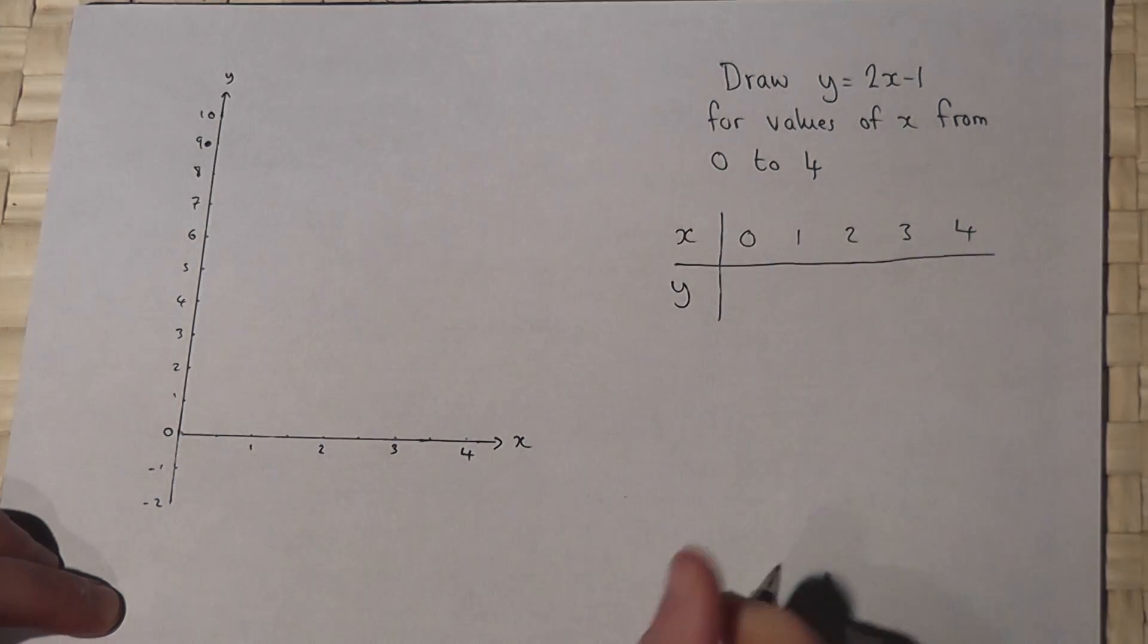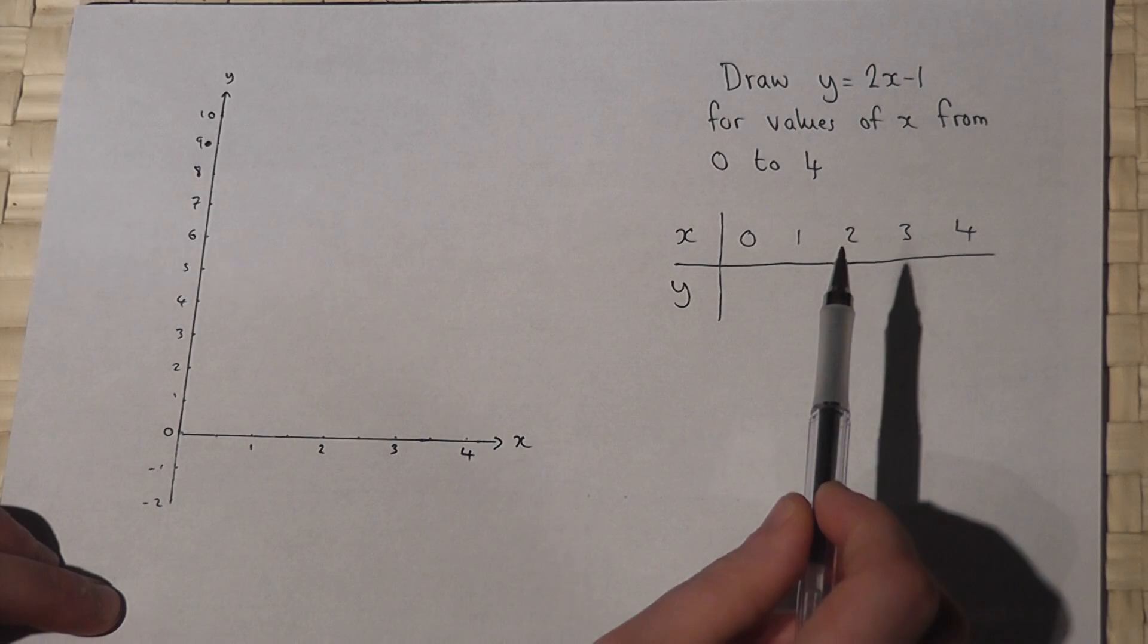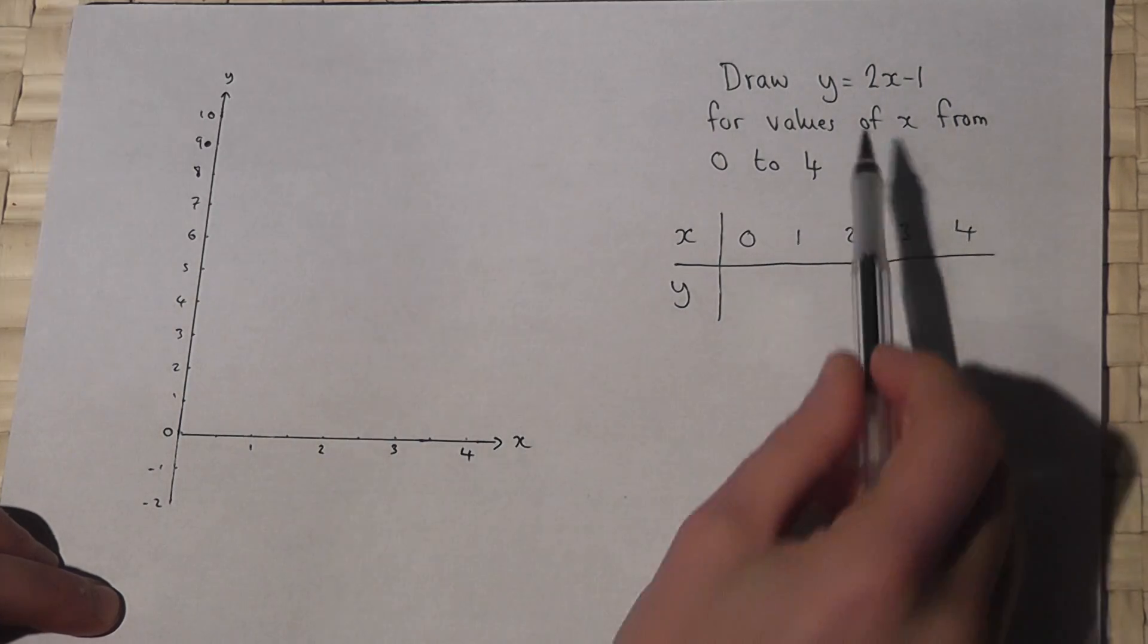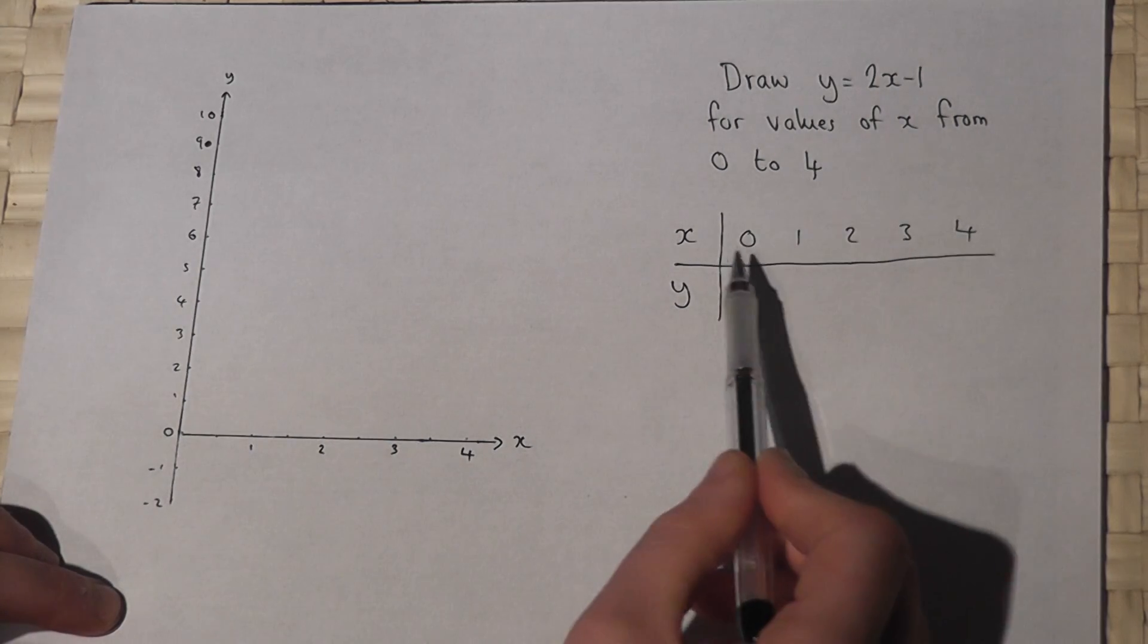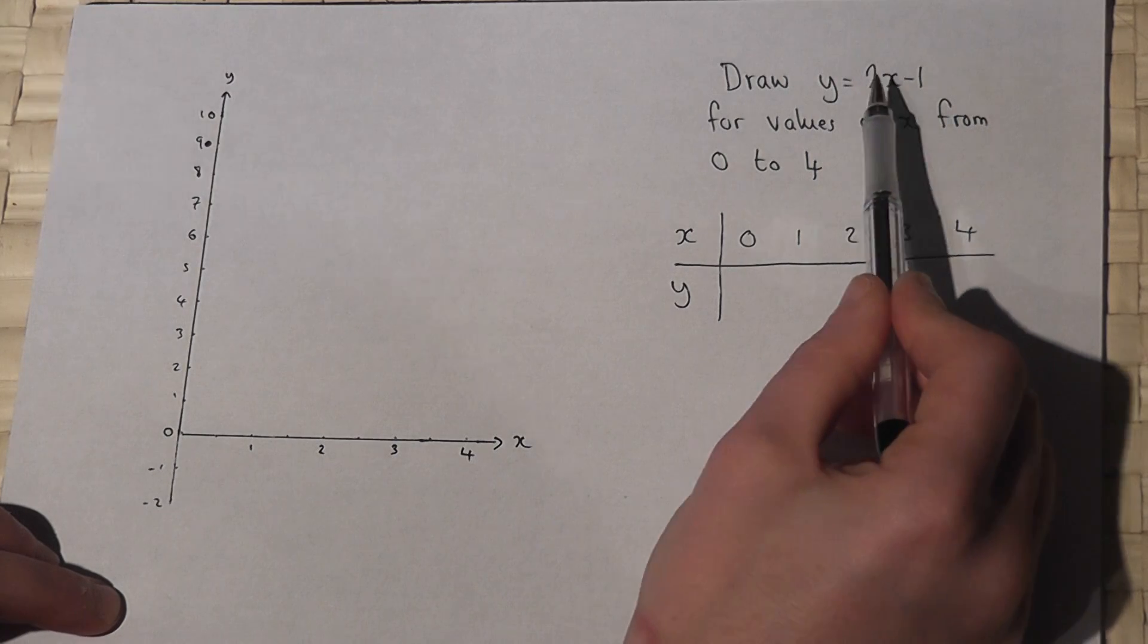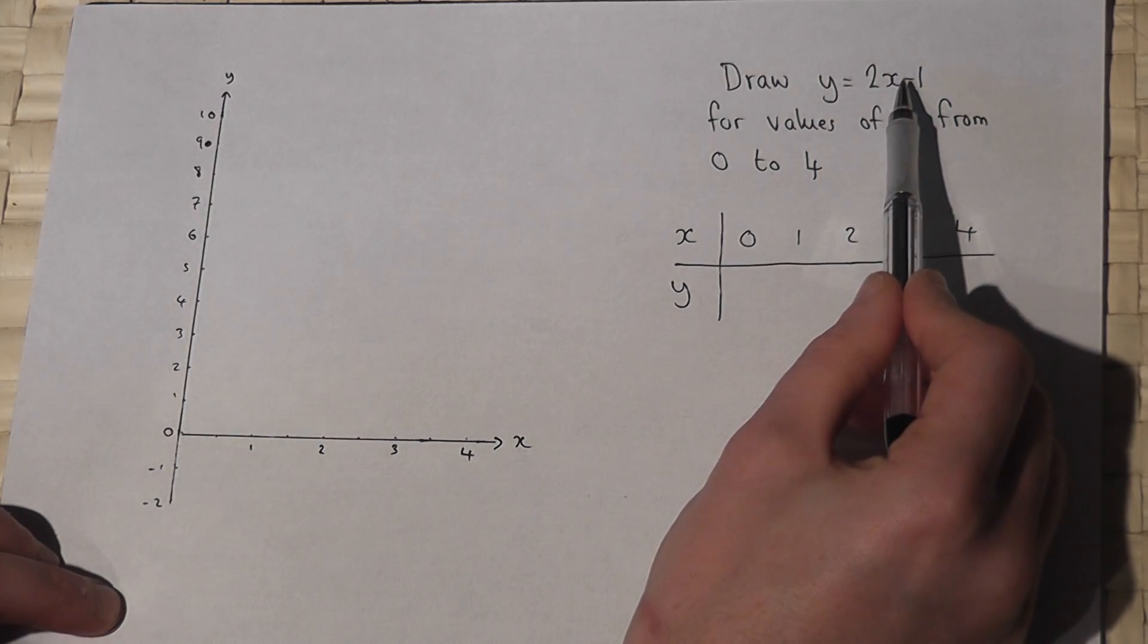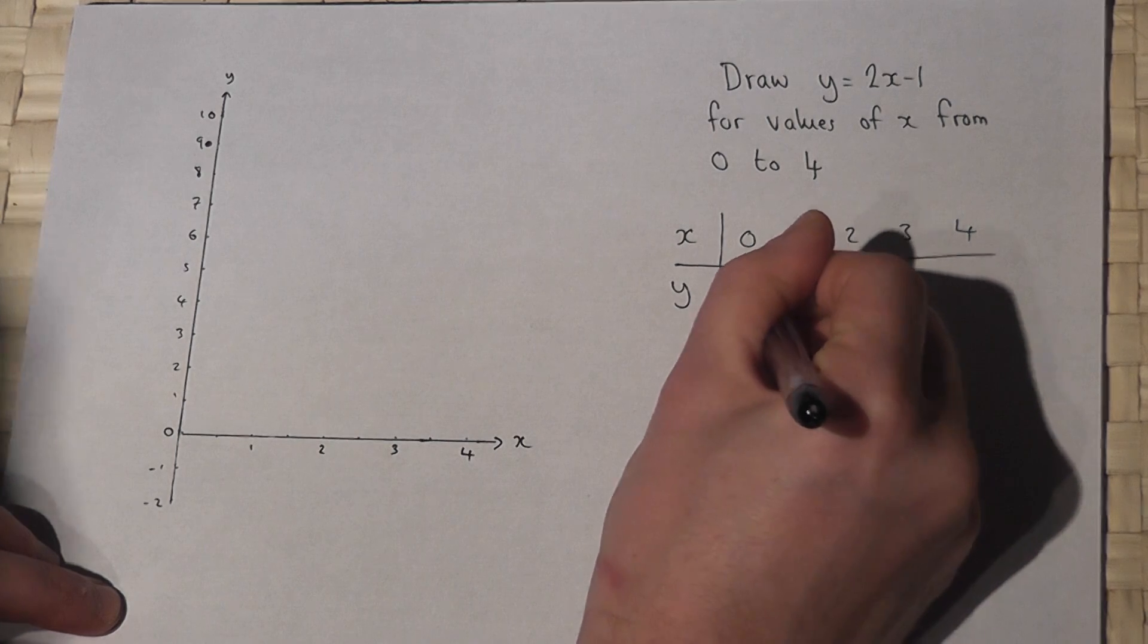I can then find the y values for each of these given x values by using the equation. So, when x is 0, y equals 2 times 0, which is 0, take away 1, which is minus 1.